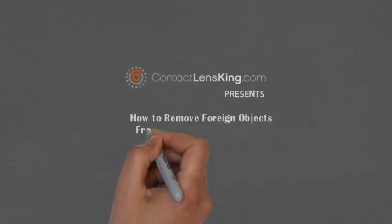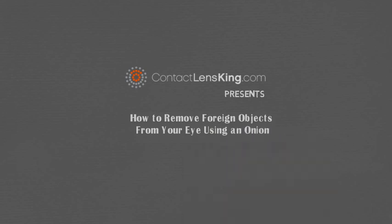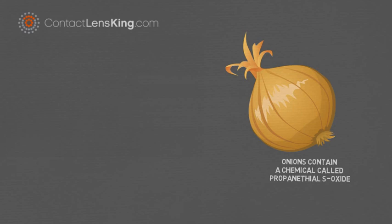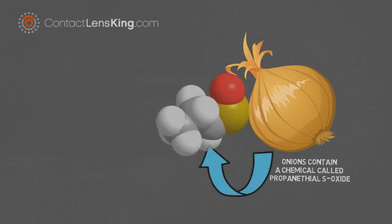How to remove foreign objects from your eye using an onion? Onions contain a chemical called propanethyl S-oxide, also known as the lachrymatory factor.